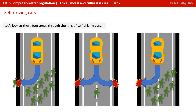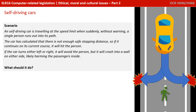Let's look at these four areas through the lens of intelligent, self-driving, automated cars. Here is a scenario: a self-driving car is travelling at the speed limit when suddenly, without warning, a single person runs out into its path. The car has calculated there's not enough safe stopping distance, so if it continues on its current course it will hit the person. If the car turns either left or right, it will avoid the person but will crash into a wall on either side, likely harming the passenger inside. What should the AI of this self-driving car do in this situation?